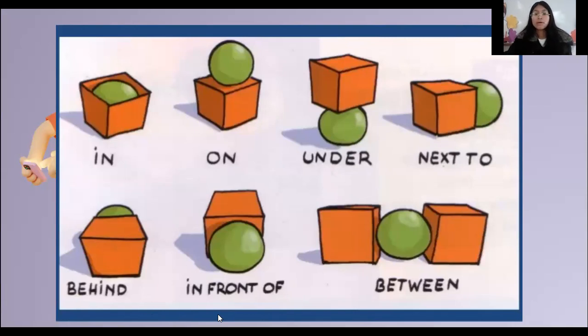The first is in, in, in the box. Dentro, dentro de una cajita, in the box. Now, where is the ball? On. Dónde está la pelotita? On. Sobre, sobre qué? Sobre la cajita, right? Number three, under.